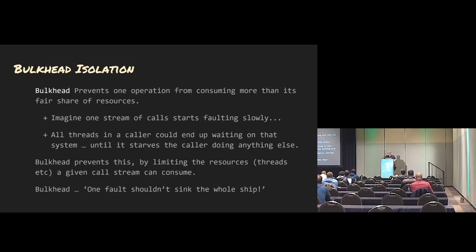Another analogy is supermarkets — they reserve checkout lines for 12 items or fewer, the express lane. That's really bulkhead isolation. If they didn't isolate those different streams and there was a glut of large shopping carts, large carts would flood all the checkout aisles and use all the capacity. So if you're just buying eggs, you'd wait just as long as if you're buying a full cart. Having some reserve aisles for smaller loads is bulkhead isolation.